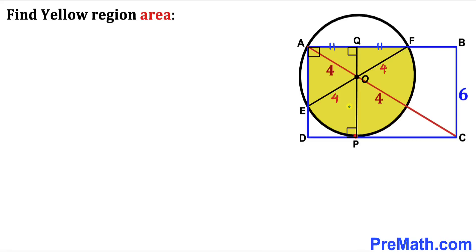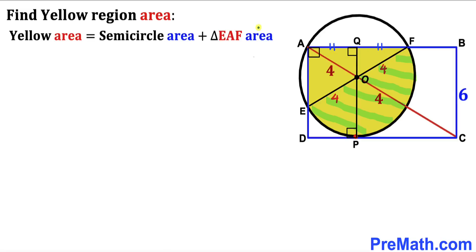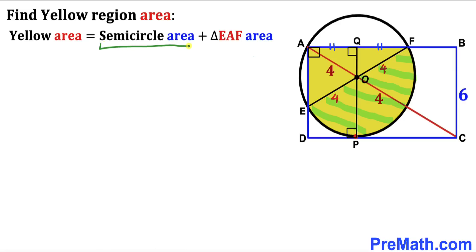Now let's focus on the yellow shaded region. We can see that diameter EF has divided the yellow region into two parts: one part is a semicircle, and the other part is right triangle EAF. So the yellow region area equals the semicircle area plus the area of right triangle EAF. Our task is to calculate both of these areas.